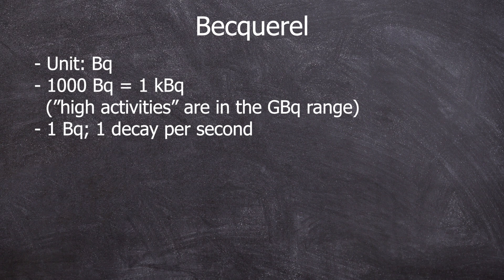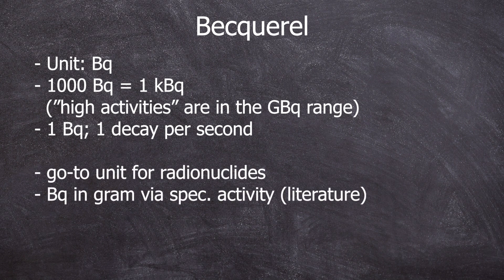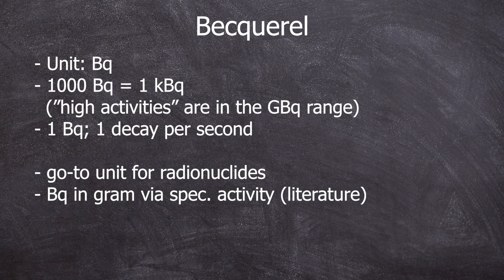Becquerel, or kilo megabecquerel, is a unit in which radionuclides, that is radioactive isotopes, are given. It's much more helpful than the unit grams. But using this specific activity, which can be easily looked up, they can be converted into each other. So then, onto the geely.